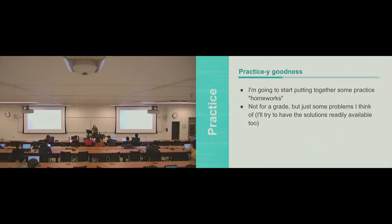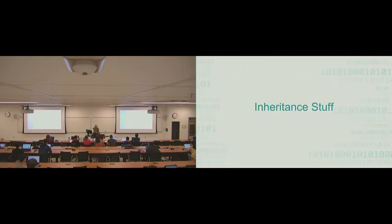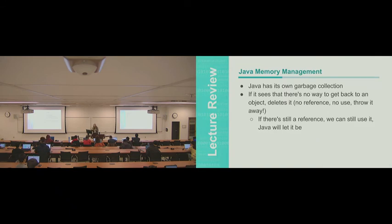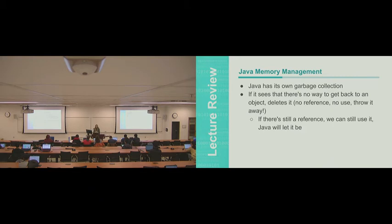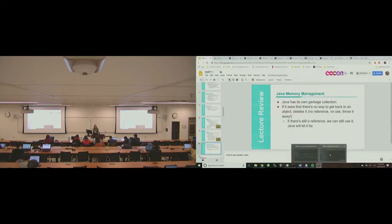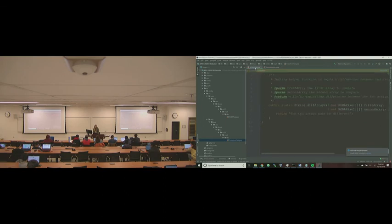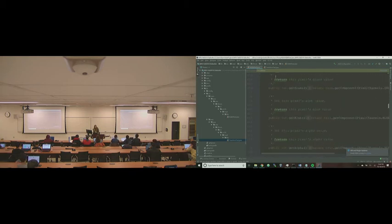I'm going to start putting together some practice - I put some stuff on inheritance you can try out. A student asks: can you talk about enumerated types and switch statements? They're coming up in the MP assignment with RGBA pixels. So basically, enums are a convenient way of declaring a set of named constants like red, green, blue, alpha. Java automatically numbers them internally, so every time you say red it's referring to an internal number.